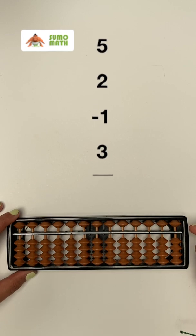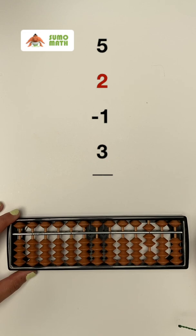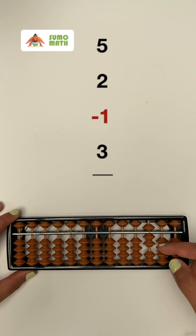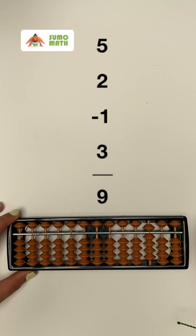Now, let's calculate five plus two minus one plus three. First, add five. Then, add two more by moving the first two lower beads to the bar with your thumb. We now have seven on the abacus. Then, subtract one by moving one lower bead away from the bar with your index finger. Finally, add three by moving three lower beads to the bar with your thumb. So now we know five plus two minus one plus three is equal to nine.